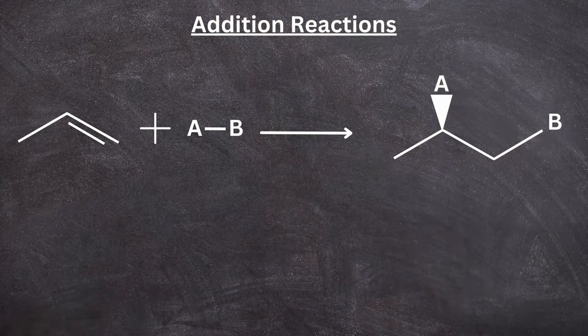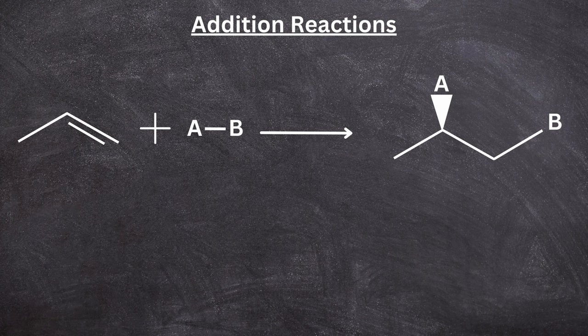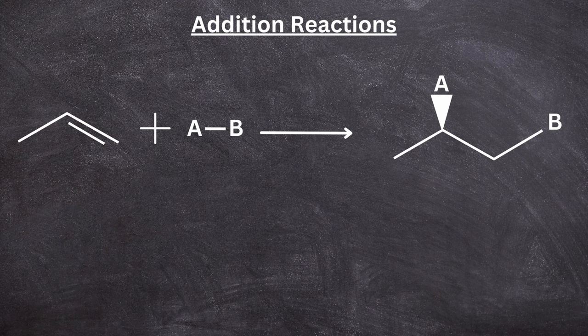Whereas in an addition reaction, one or more atoms are being added to the molecule. So it is an addition of atoms in a given molecule. Here is a rough example of how an addition reaction would look like. We have an AB molecule where A chooses to go to one carbon of the molecule.